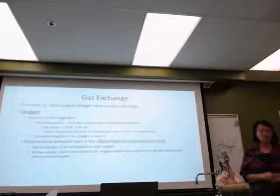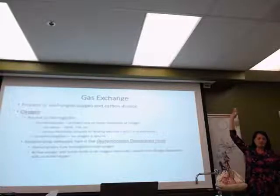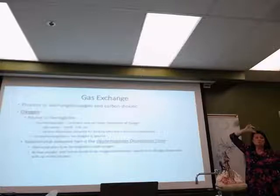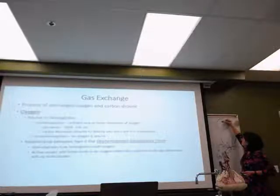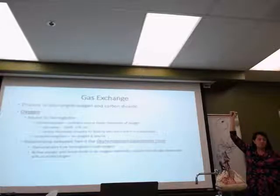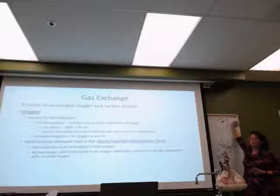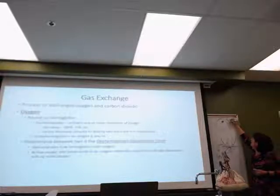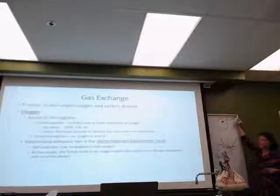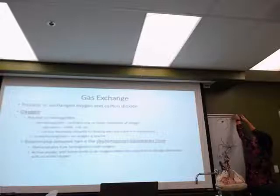Hemoglobin is found inside the red blood cell, whose only job as a mature cell is transportation. The hemoglobin has four iron-containing heme spots that hold oxygen. If all four spots have an oxygen attached, we are at 100% oxygenation. If only three oxygens are attached to that one hemoglobin, what would the saturation be?